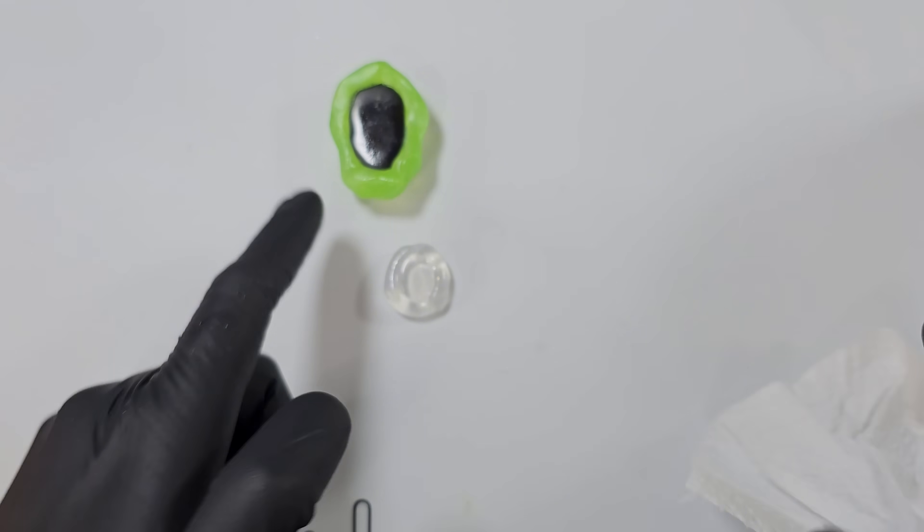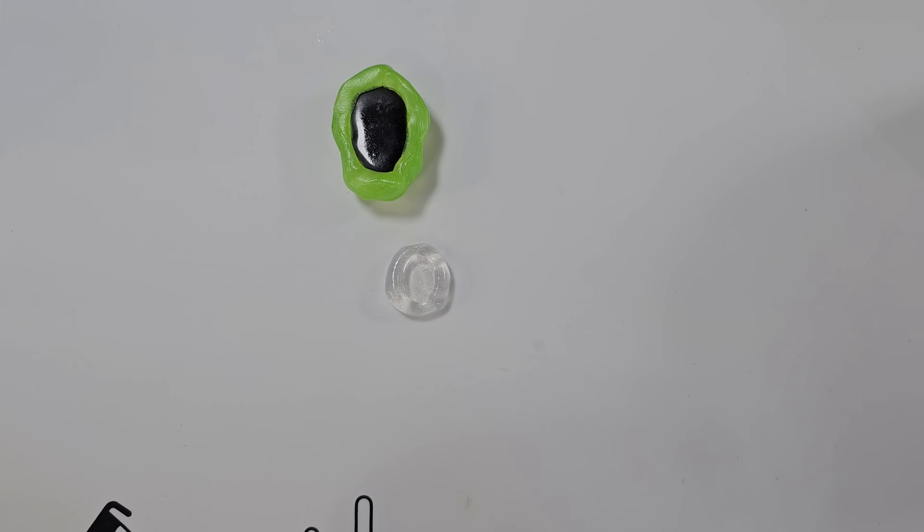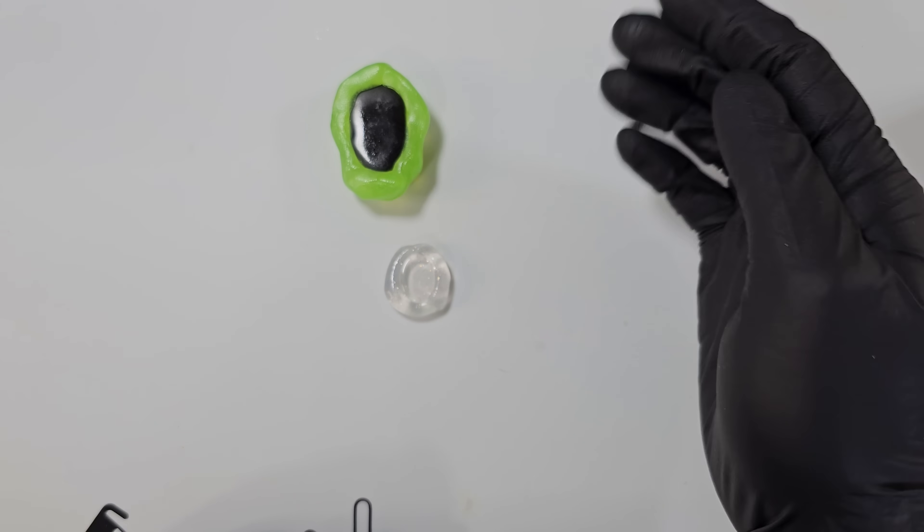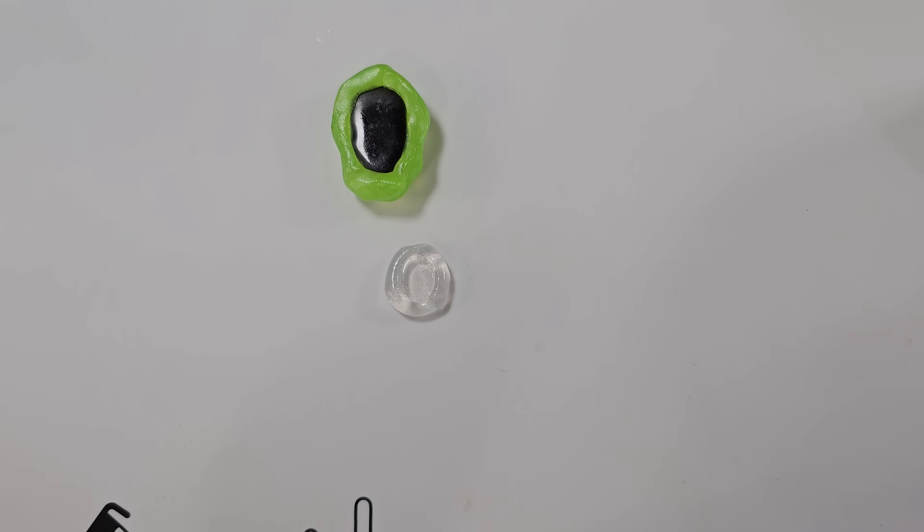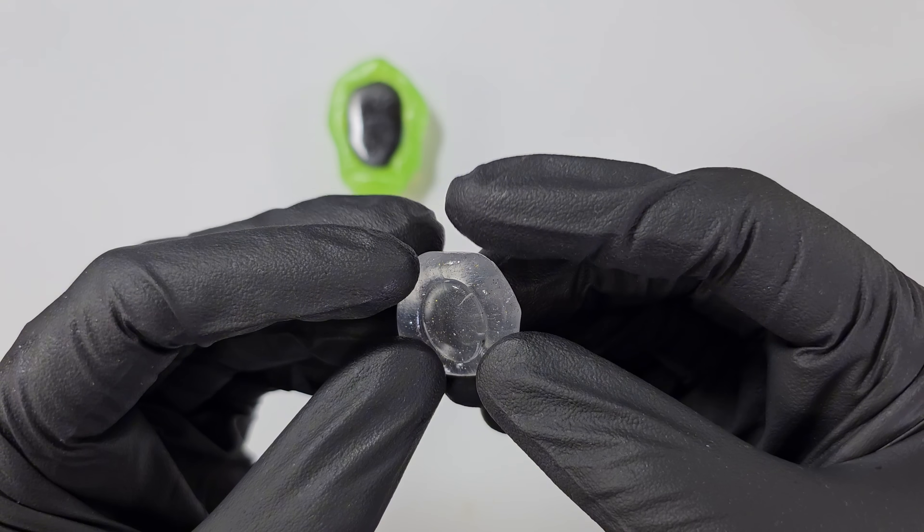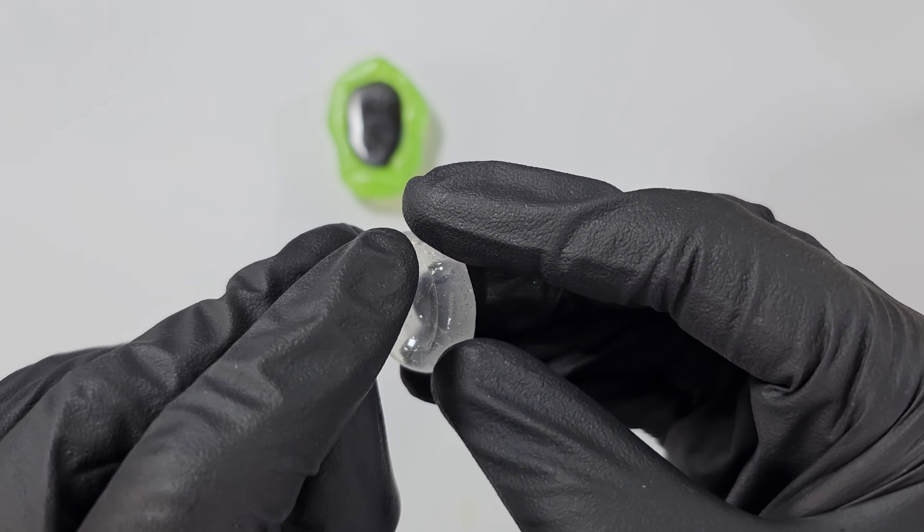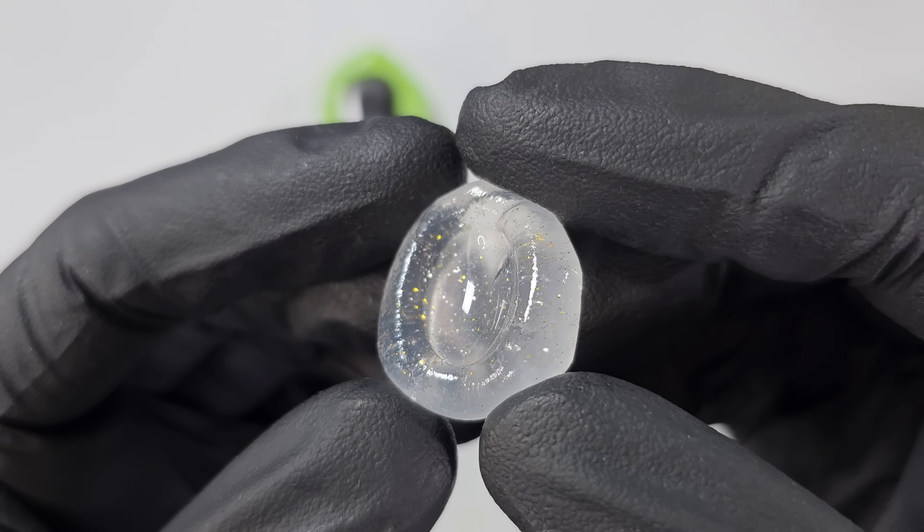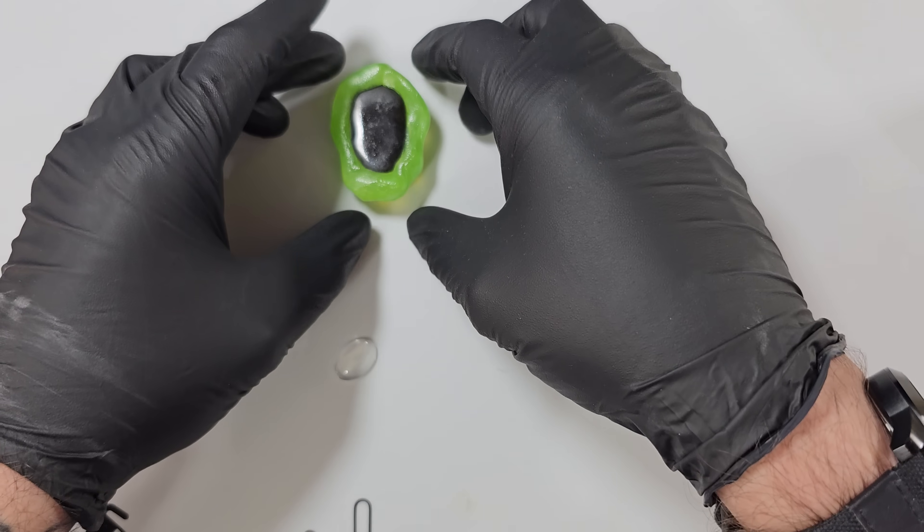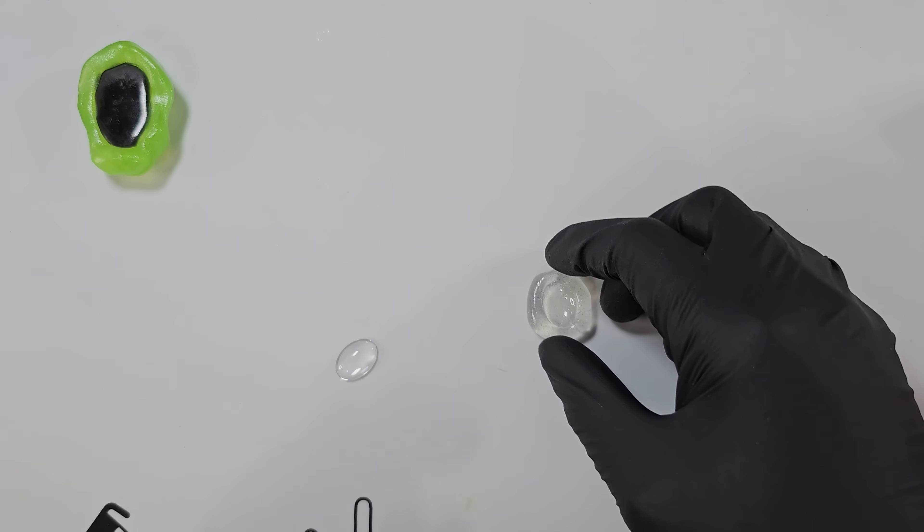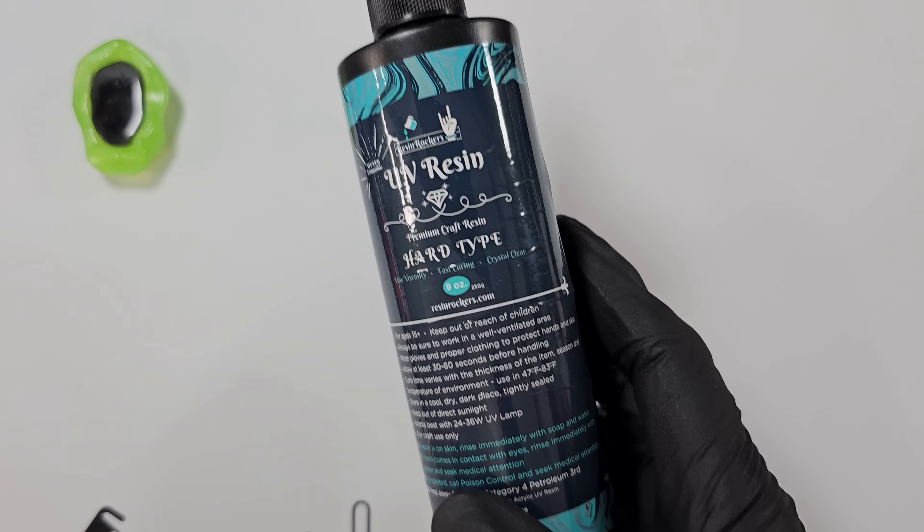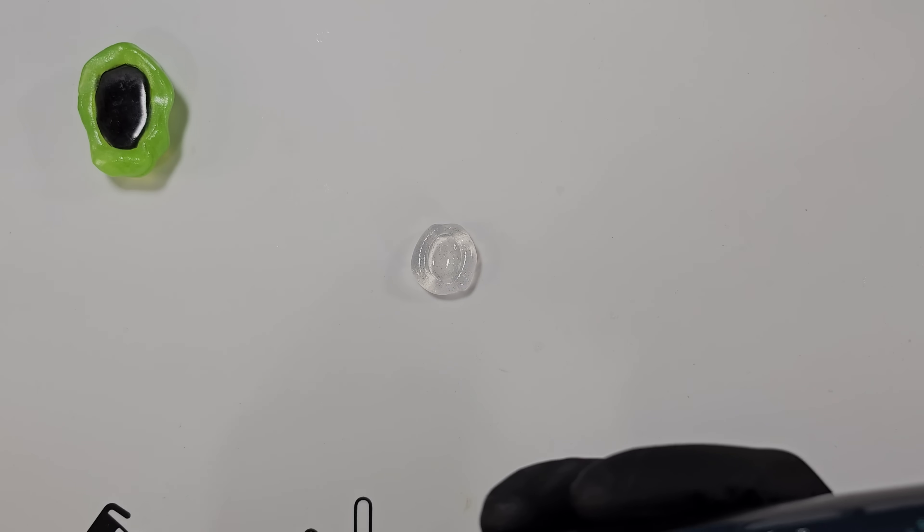I think that'll do. Somebody mentioned in the comments brush on UV resin and cure it to make like a shell. I really don't know. So this one should be ready to take out now. Super shiny. So while that's cooling down, let's test the UV resin.